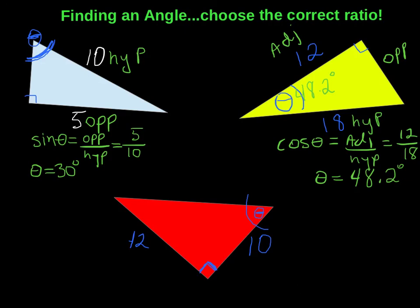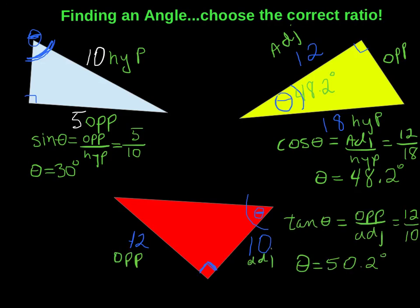Alright, and now on for the red triangle. So hopefully you're getting the hang of this. This red triangle, this theta right here, works out to be 50.2 degrees. And that's because we ended up using our opposite and adjacent side which forced us to use tan theta.